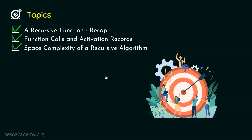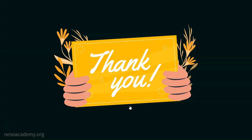We are now ready to solve some problems. We will take examples to properly understand how to find the space complexity of a recursive algorithm. In the next lecture, we will discuss the example of calculating the factorial of n recursively, and through that example we will learn how to find the space complexity of a recursive algorithm. With this, we are done with this lecture. Thank you for watching.